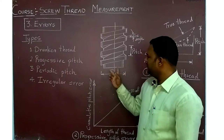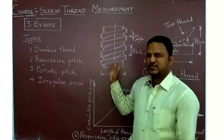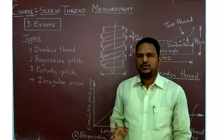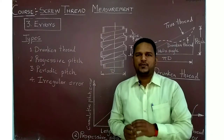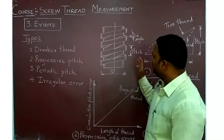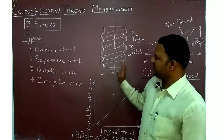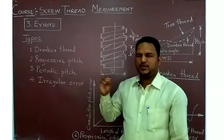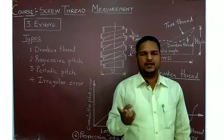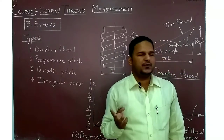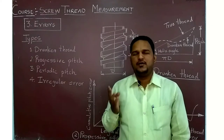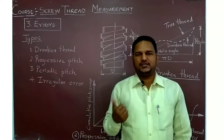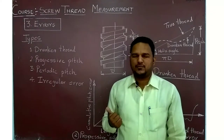We manufacture threads most commonly on the lathe machine. There are 5 basic parameters for any screw thread: major diameter, minor diameter, effective diameter, pitch, and thread angle.